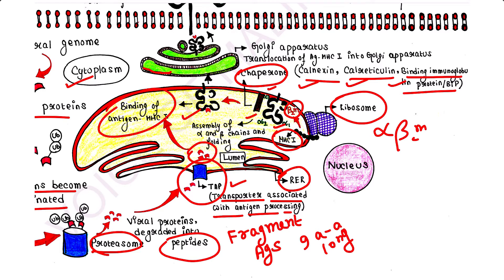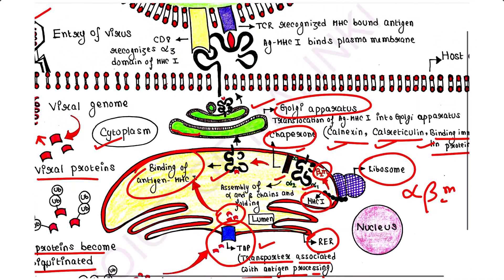The thus-formed MHC-antigen complex leaves the RER, translocates to Golgi apparatus, and moves finally to the plasma membrane.